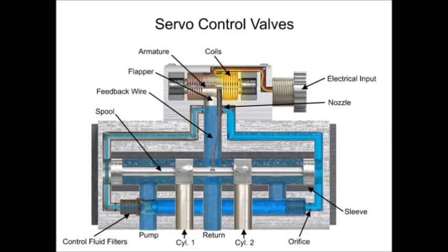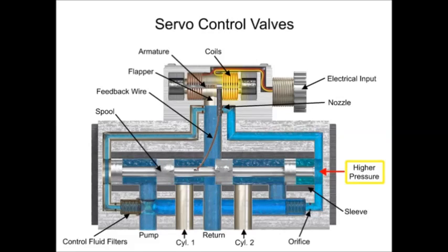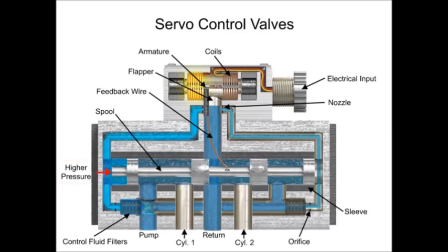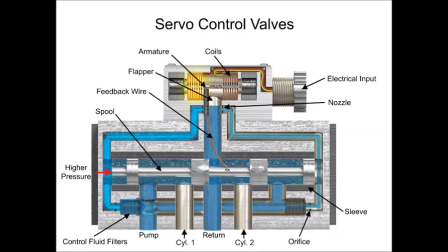The spool then starts to move away from the higher pressure. If the armature turns clockwise, pressure builds on the left end of the spool and it moves to the right. With these very accurate feedback devices and a fast-response servo valve, an actuator's position, speed, and/or force can be repeatedly established within an extremely close range. Electronics provides the accuracy while hydraulics provides the force via a super-responsive servo valve.